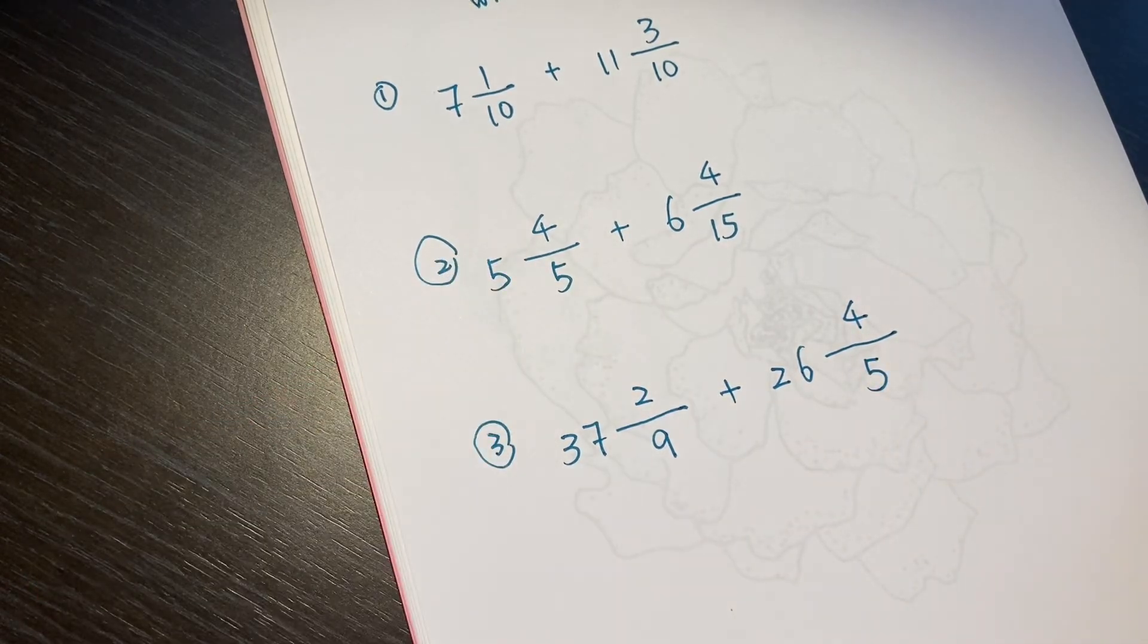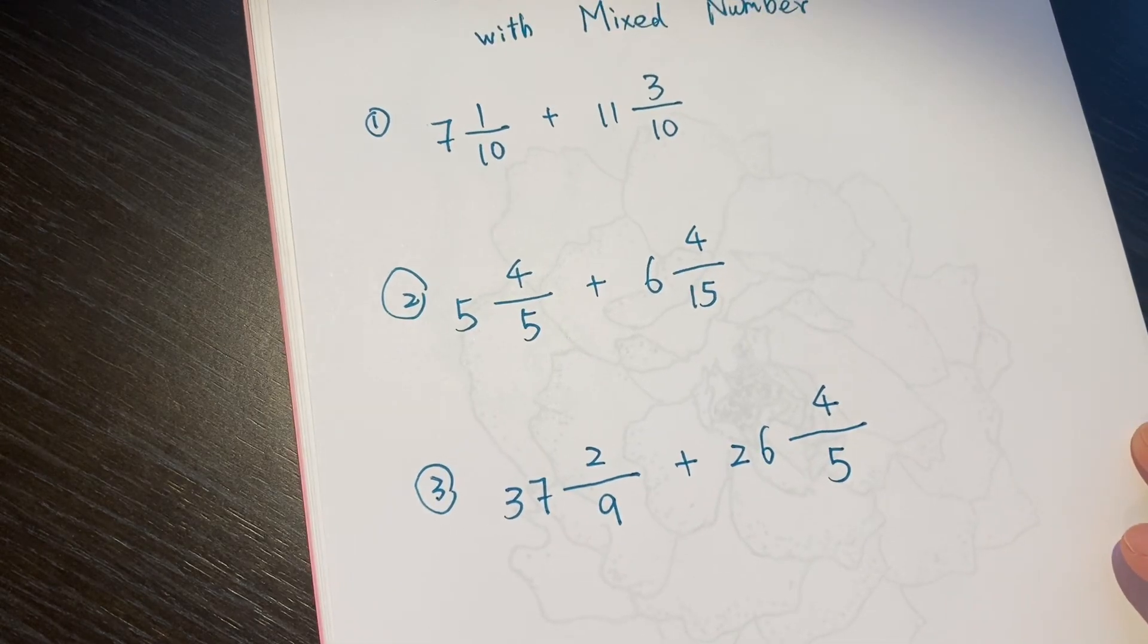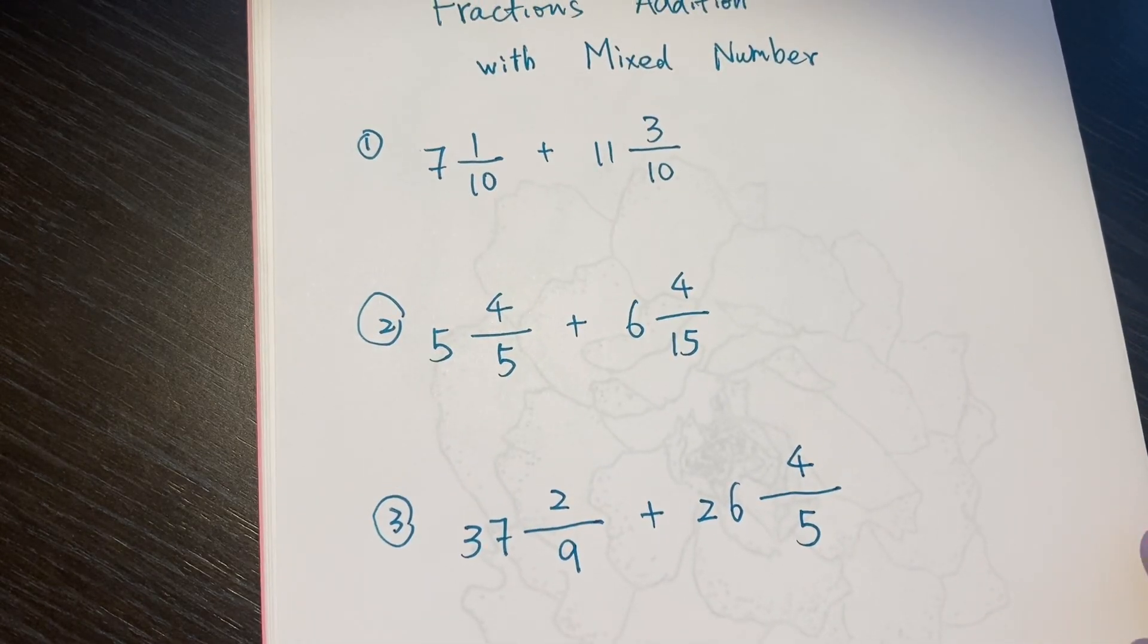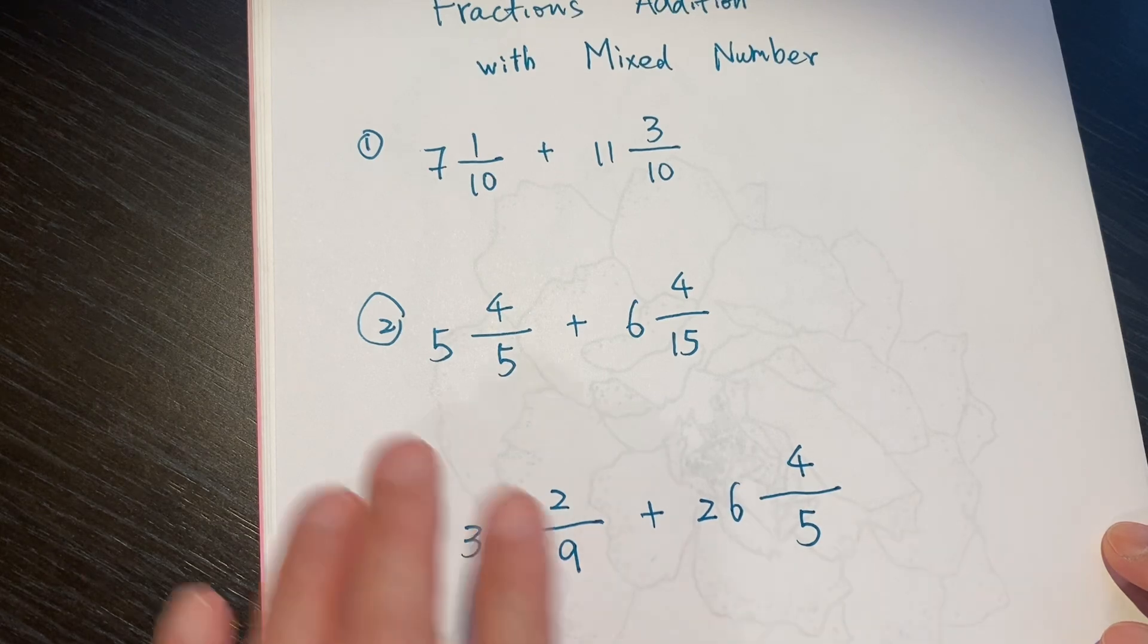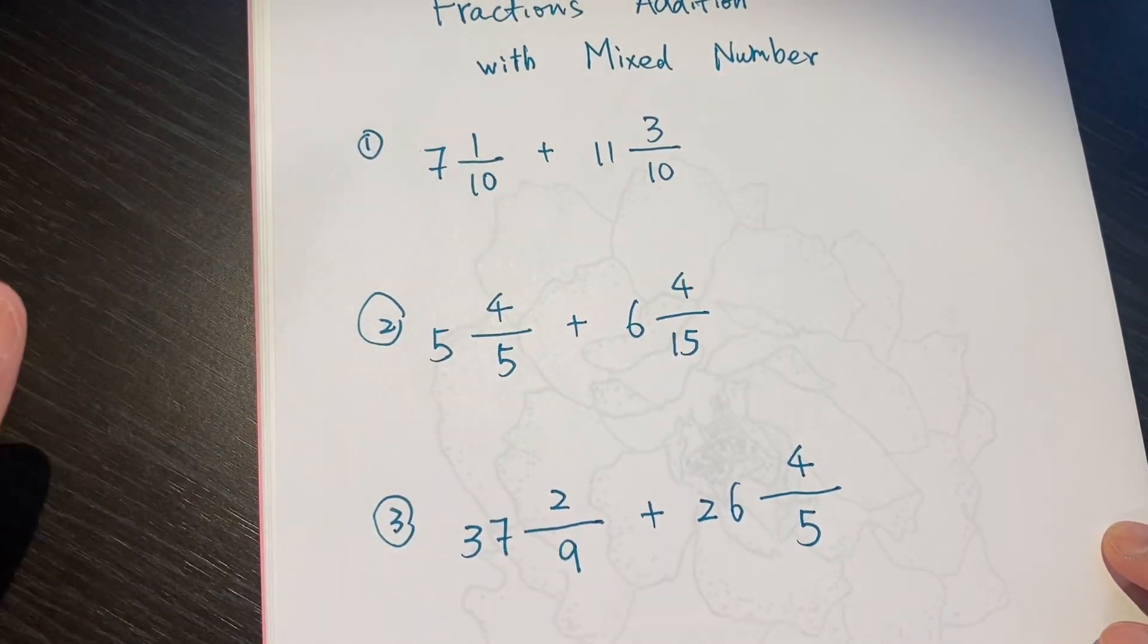Here, 37 and 2 over 9 plus 26 and 4 over 5. Oh, 4 over 5 again. I must have a loving for this number.